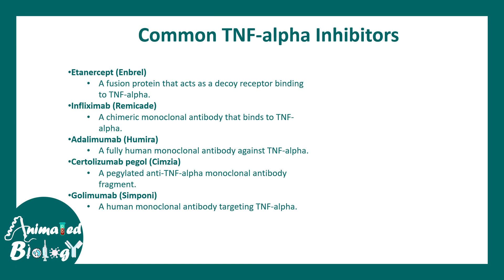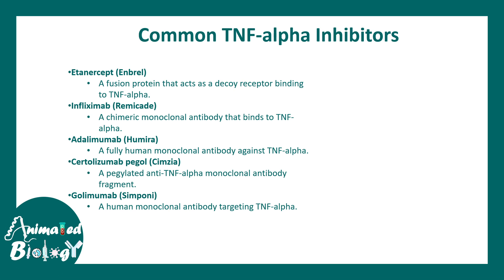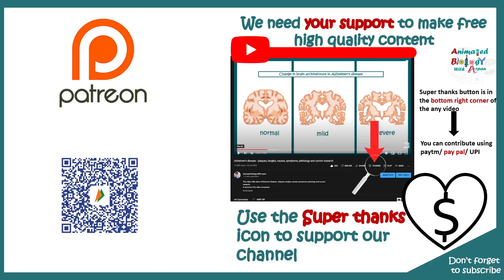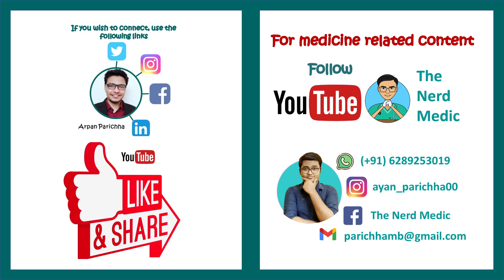Just a quick recap — we talked about several inhibitors of TNF-alpha. Many of them are monoclonal antibodies. One of them is a recombinant protein which acts like a decoy — it's a soluble receptor which clogs up and sponges up TNF-alpha and prevents its function. If you like this video, give it a quick thumbs up. Don't forget to like, share, and subscribe.